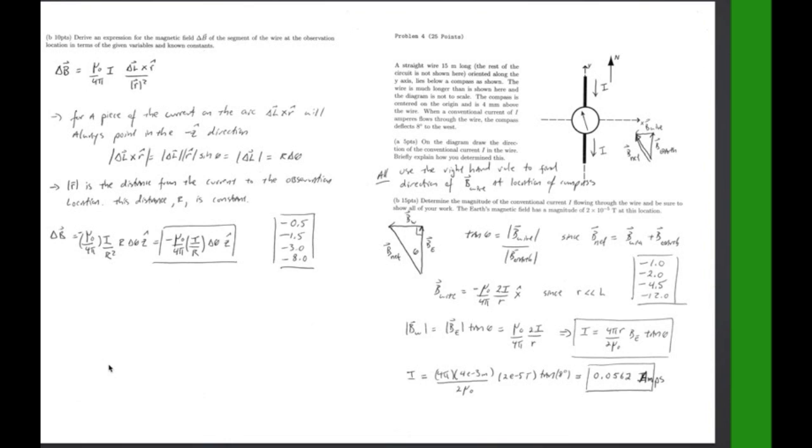Then you know just a straight formula off the formula sheet that what B y equals, since R is much greater than L. Just plug and chug as you can see going through and you get a current of 0.0562 amperes. That was part B.